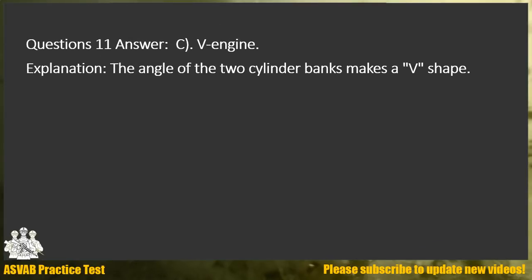Question 11. Answer C. V engine. Explanation: The angle of the two cylinder banks makes a V shape.